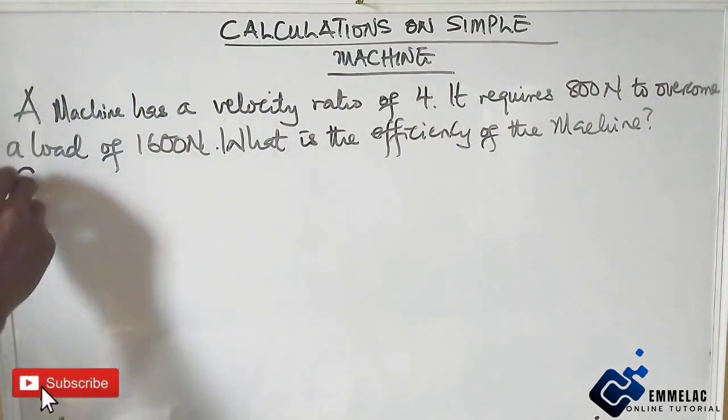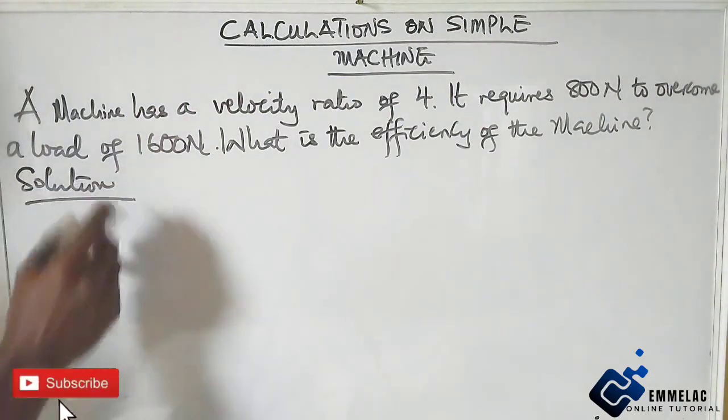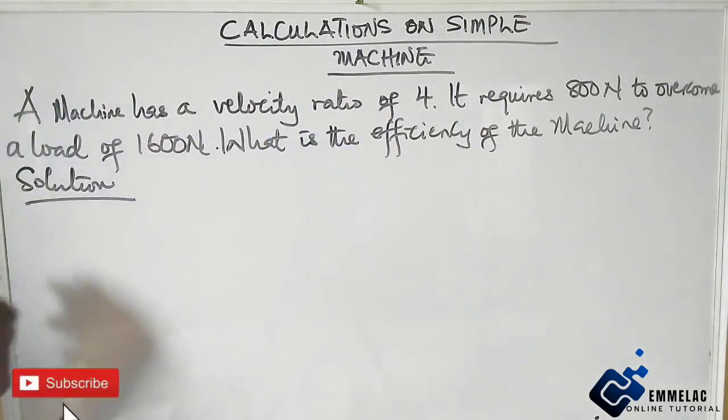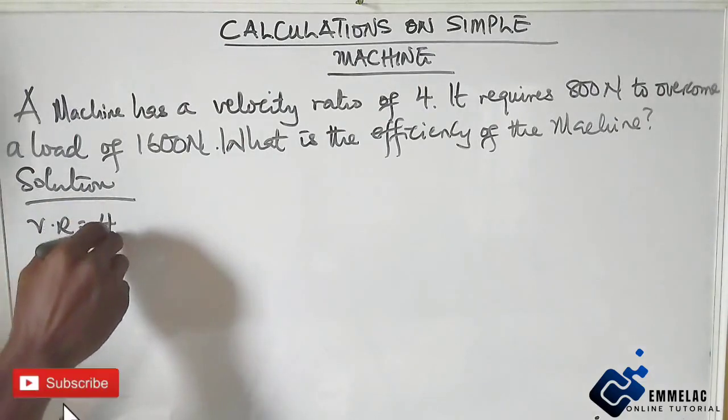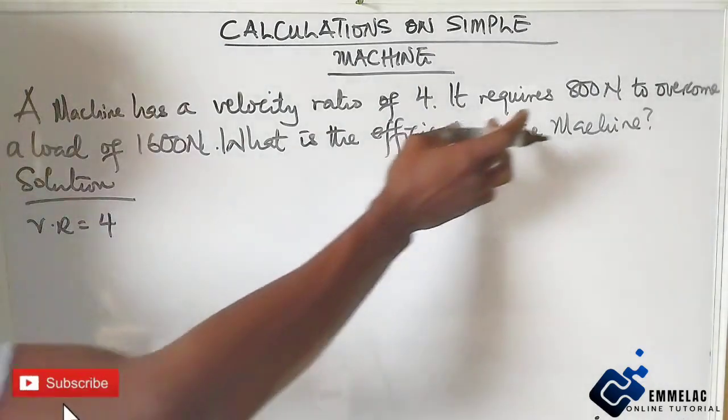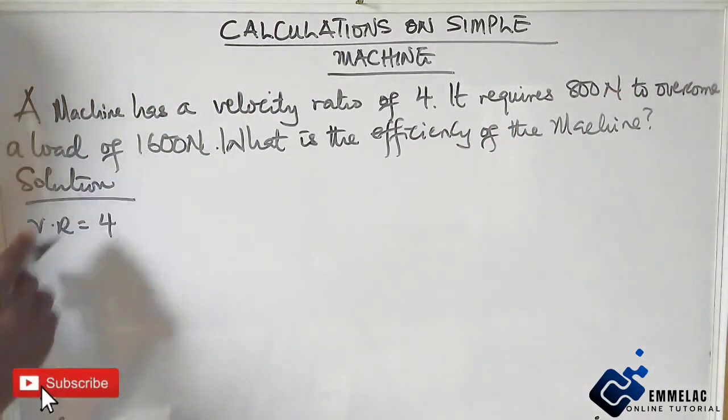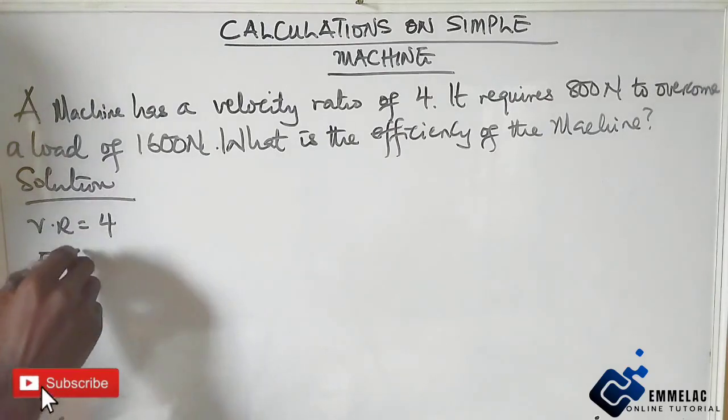Now in tackling this, what we need to do is write out the parameters. First, we are given that velocity ratio is 4. It requires 800 Newton to overcome a load, so our effort E is 800 Newton, and our load L is 1600 Newton.